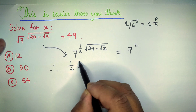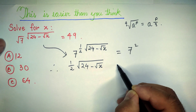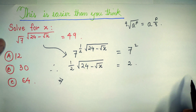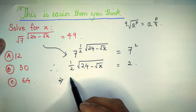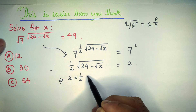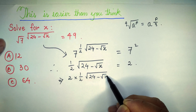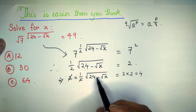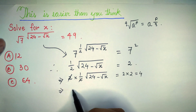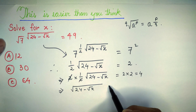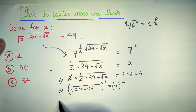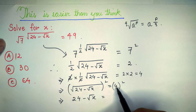Therefore, 1 by 2 times (root over 24 minus root over x) is equal to 2. Multiplying both sides by 2, we get: root over 24 minus root over x is equal to 4. Now squaring both sides, the square and root cancel each other, so it remains: 24 minus root over x is equal to 4 squared, which is 16.